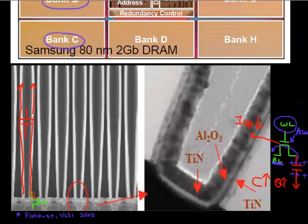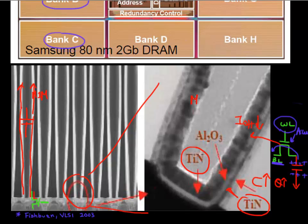This antenna is the capacitor — it's a MIM capacitor: metal, insulator, metal. You have one layer of titanium nitride, then another layer of titanium nitride, and in between is aluminum oxide as the insulator — that makes up this capacitor.